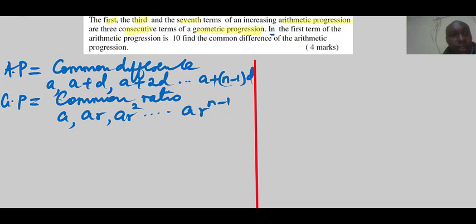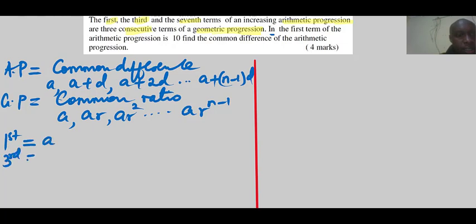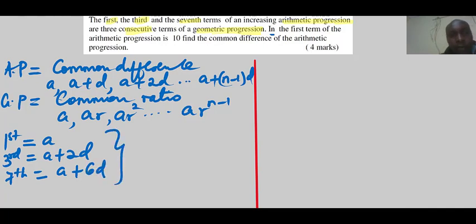Having known that, let's go to our question. We need to write the first, the third, and the seventh terms of the AP. The first term is a. The third term is a+2d. The seventh term is a+6d. These three form three consecutive terms of a GP. Consecutive means following each other, like 1, 2, 3, 4, 5.